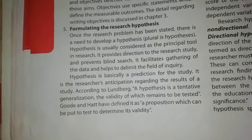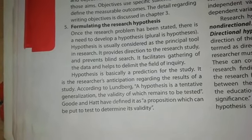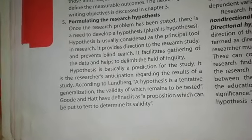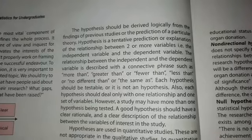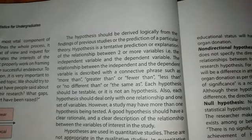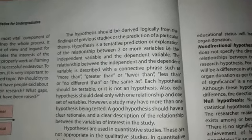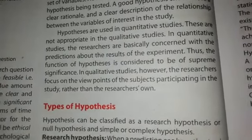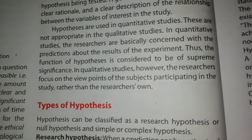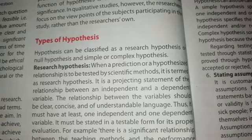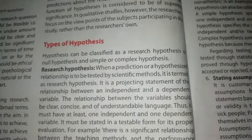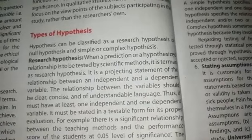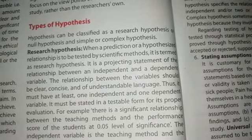The hypothesis is a tentative generalization, the validity of which remains to be tested. We have to test its validity through a study using logical reasoning. This hypothesis can be used in quantitative studies. Types of hypothesis: research hypothesis and null hypothesis. The research hypothesis states a relationship — it is a scientific method to test the relationship between an independent variable and a dependent variable. It is clear, concise, and in understandable language.